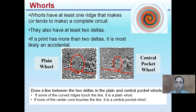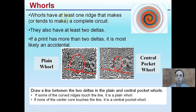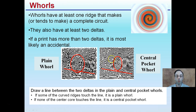Continuing on to whorls. Whorls have at least one ridge that makes or tends to make a complete circuit, and they also have at least two deltas. If the print has more than two deltas, it's likely accidental. For the plain whorl and central pocket whorl, we draw a line between the two deltas. If some of the curvature just touches the line, it's considered a plain whorl. If none of them touch the center line, we call it a central pocket whorl.